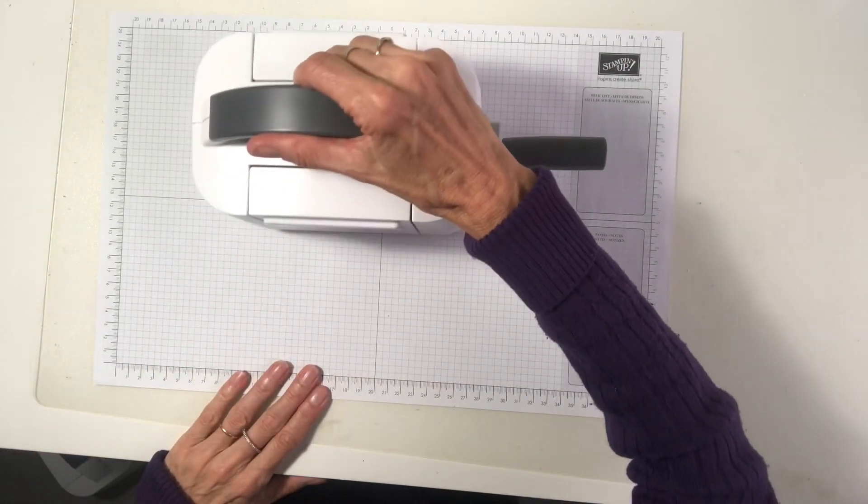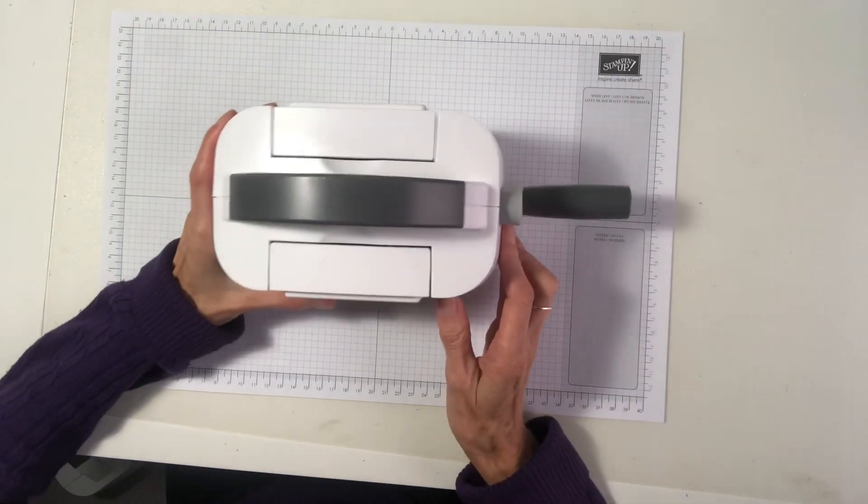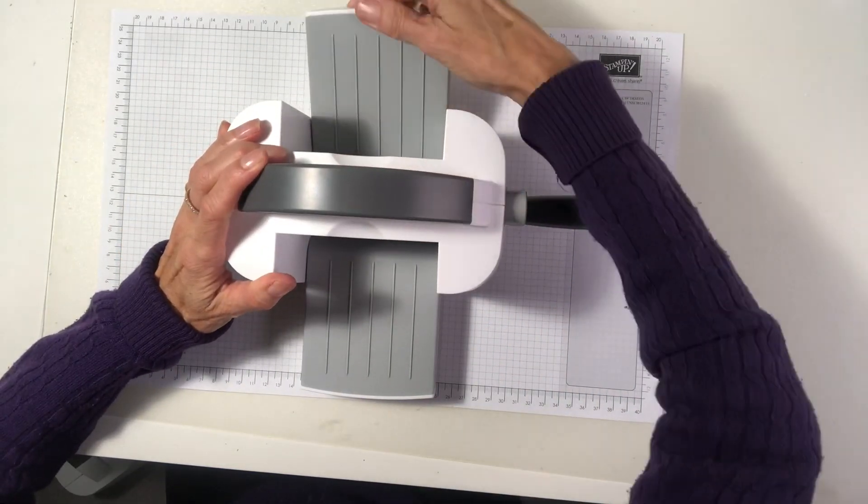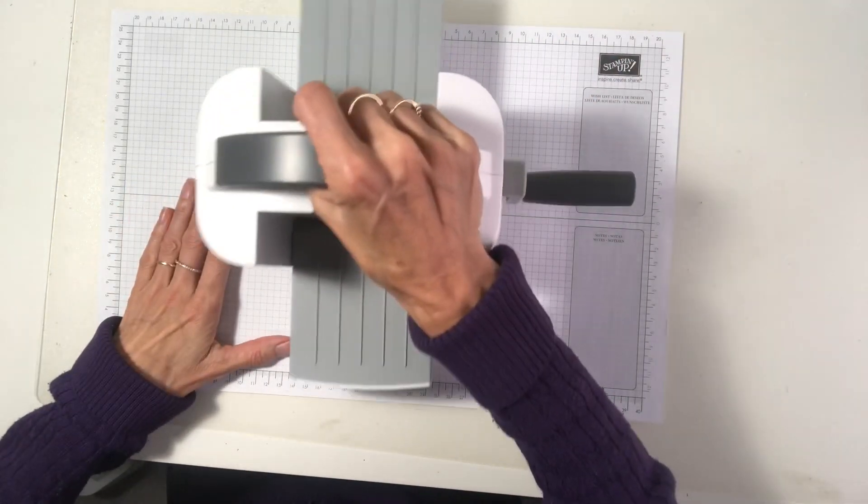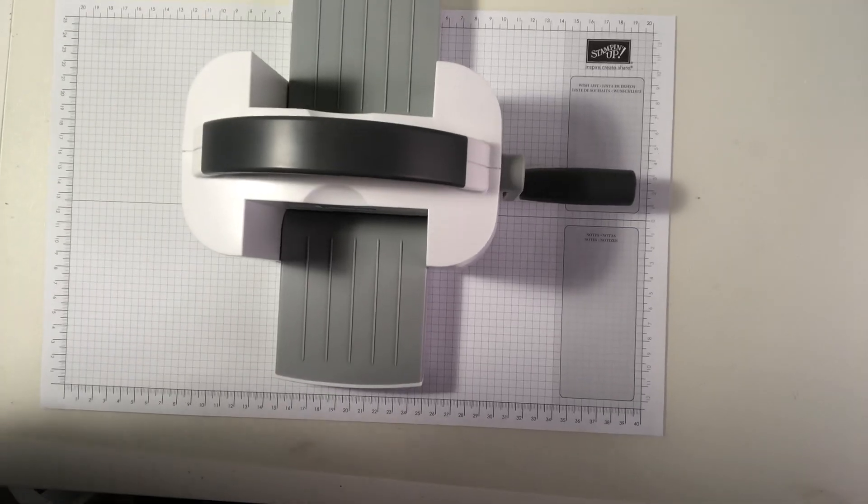So here we have our little mini Stamp and Cut Emboss Machine. It has the fold up flaps just like your standard one and it's so compact and so cute. Let's have a look. We'll bring it down a little closer so you can see.